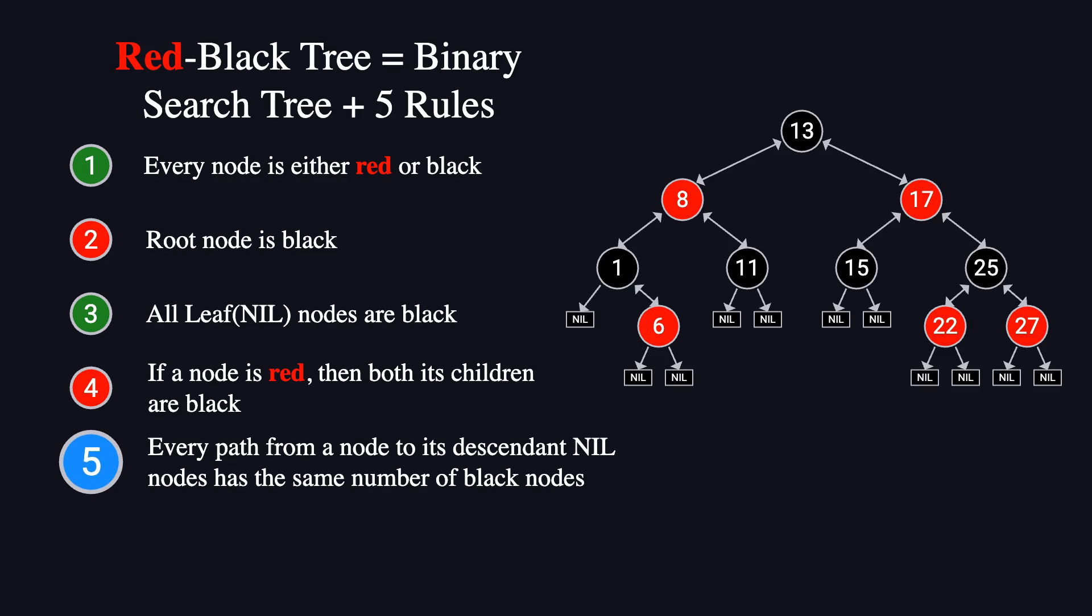Rule five states that every path from any node to a leaf must contain the same number of black nodes, meaning the black height must be consistent. This rule is never violated when inserting a red node, because a red node does not affect the number of black nodes on any path.